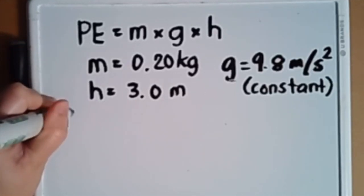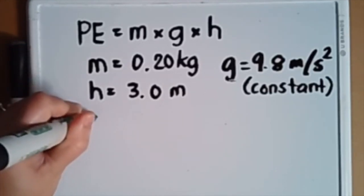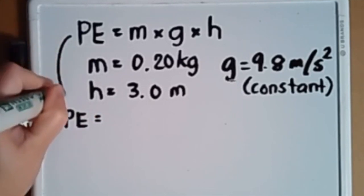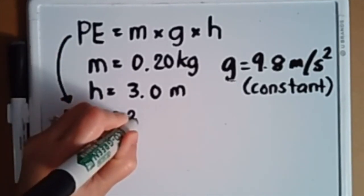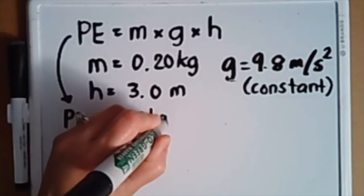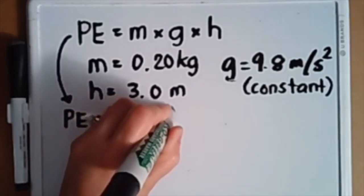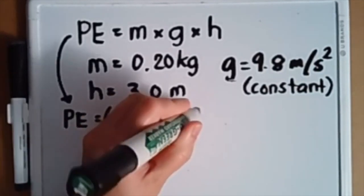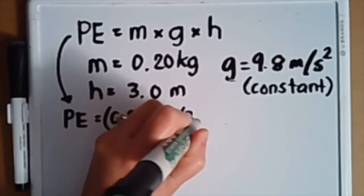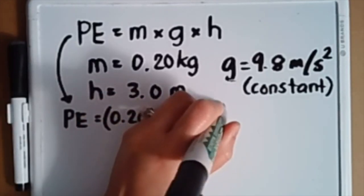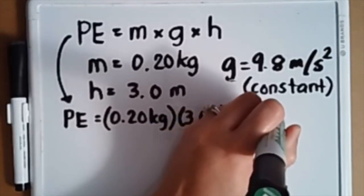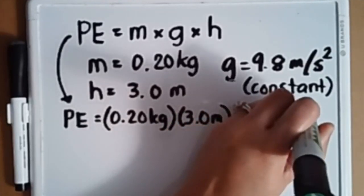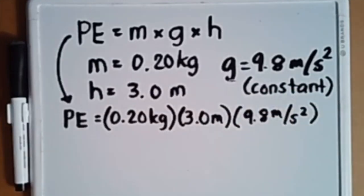All you need to do next is plug in the values. PE equals—now use the mass of 0.20 kilogram. It's always good to keep writing the units; that's one way of checking your answer. Now substitute H, which is 3 meters.